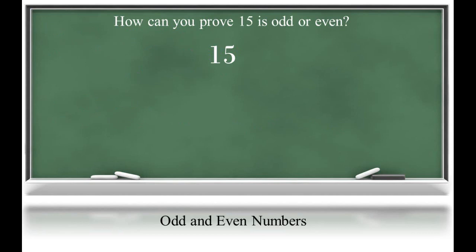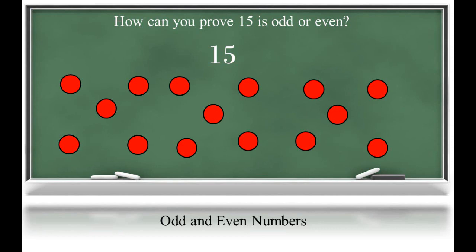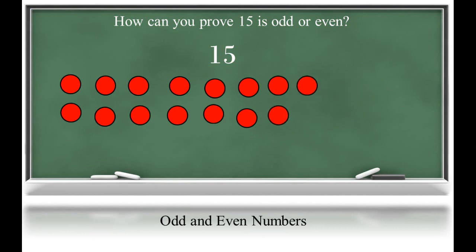The learner may think through this problem by counting out 15 objects. The learner will recall the difference between odd and even numbers is determined by whether each object can have a partner object to form a pair. The learner will discover, as shown here, that 15 is made up of 7 pairs with one object left over. This one left over is the reason we classify 15 as odd.